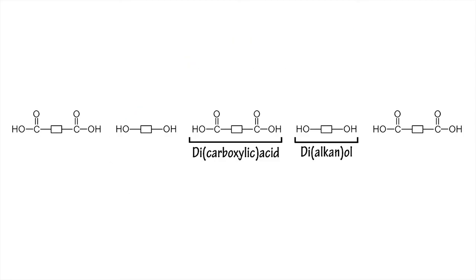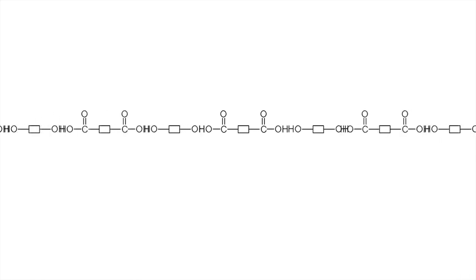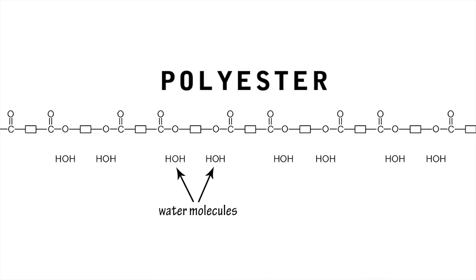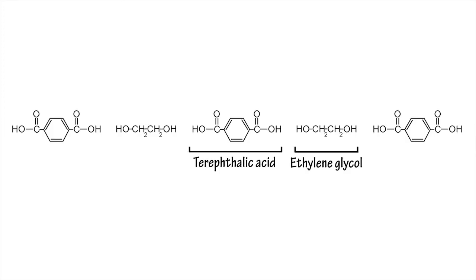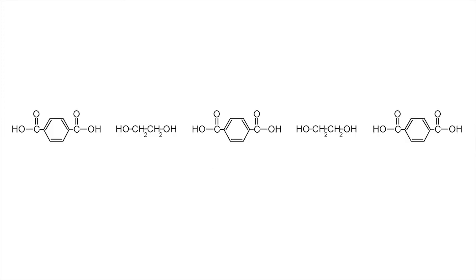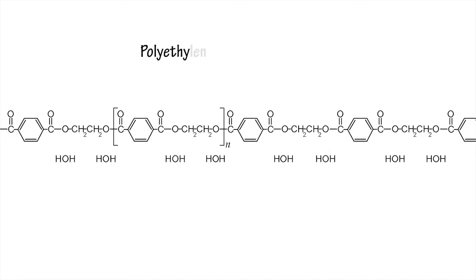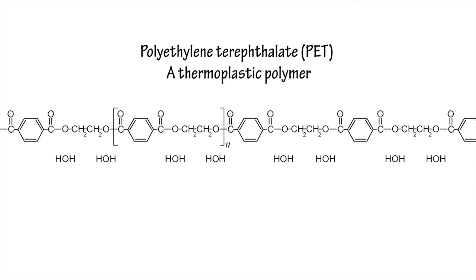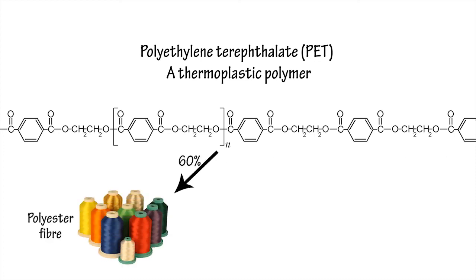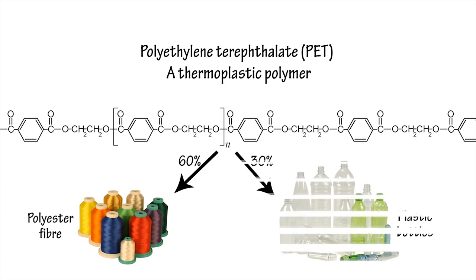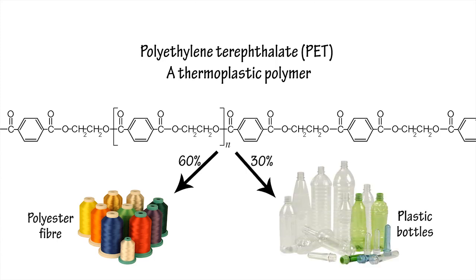Industrially, diols and diacids are combined in condensation reactions to form polyesters. For example, ethylene glycol reacts with terephthalic acid to form the polyester polyethylene terephthalate, commonly abbreviated to PET, a thermoplastic polymer used to make a variety of products. About 60% of the PET produced is used to make synthetic fibres, and another 30% plastic bottles.